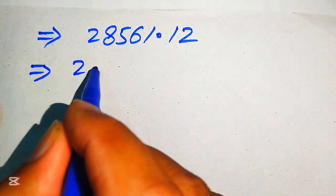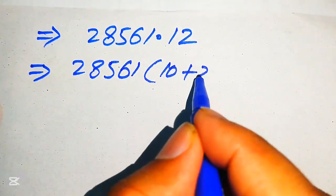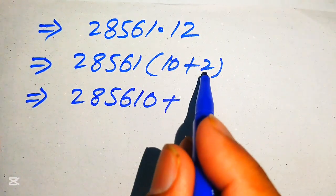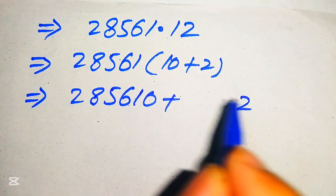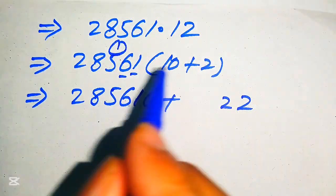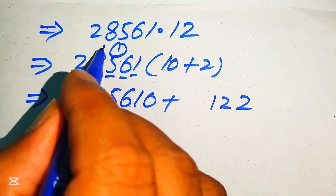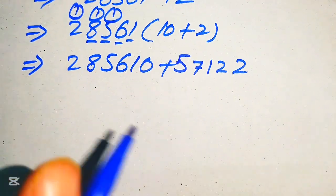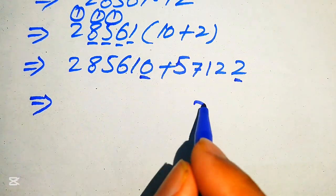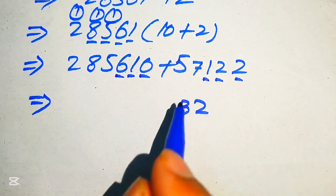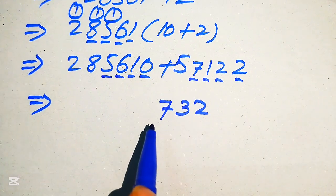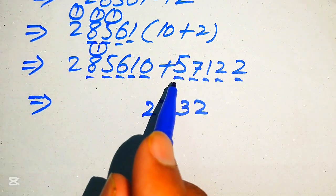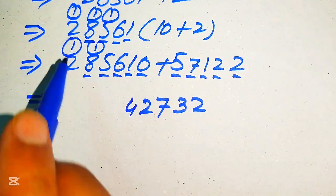To multiply 28561 by 12, we break 12 as 10 plus 2. Multiplying by 10 gives 285610. Multiplying by 2: 2 times 1 is 2; 2 times 6 is 12, write 2 carry 1; 2 times 5 is 10 plus 1 is 11, write 1 carry 1; 2 times 8 is 16 plus 1 is 17, write 7 carry 1; 2 times 2 is 4 plus 1 is 5, giving 57122. Summing: 285610 plus 57122 gives 342732.